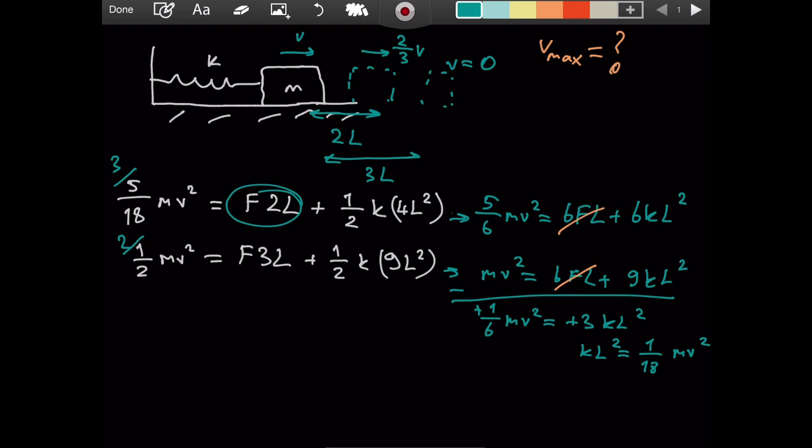Now I also want to express FL in terms of Mv squared. So let's just substitute this result to this equation. So that we have Mv squared equaling 6FL plus. We have 9KL squared. So if we multiply by 9 here, 9 and 9, we see that 9KL squared equals 1 over 2 Mv squared. So 6FL equals 1 over 2 Mv squared. Which means that FL equals 1 over 12 Mv squared.